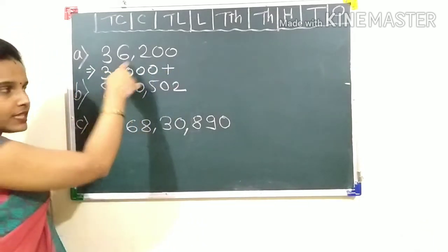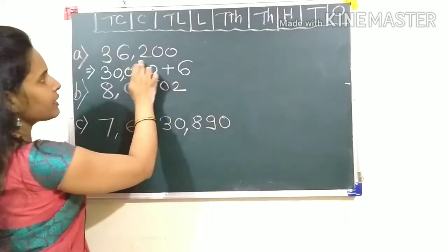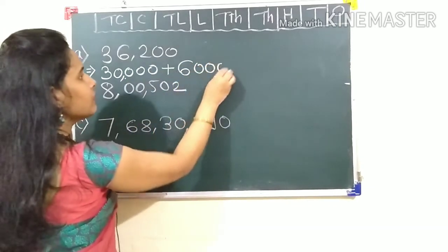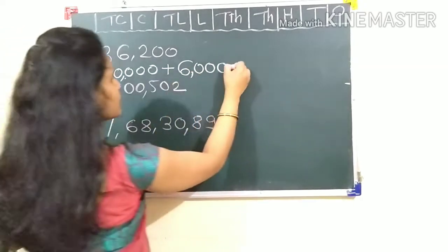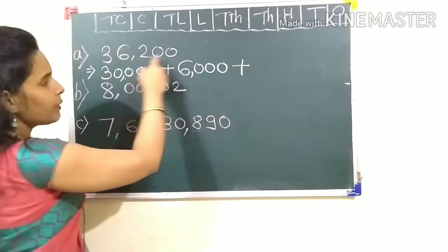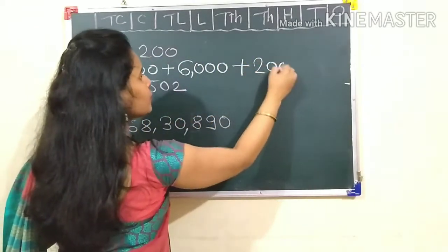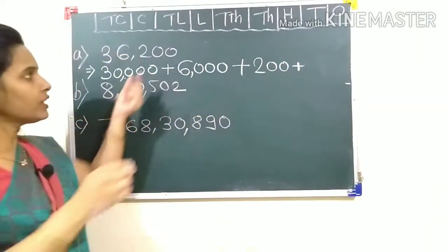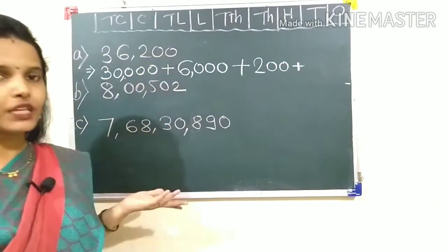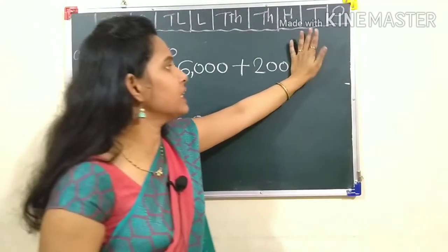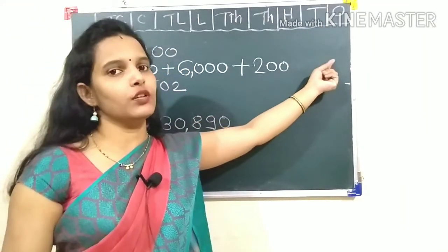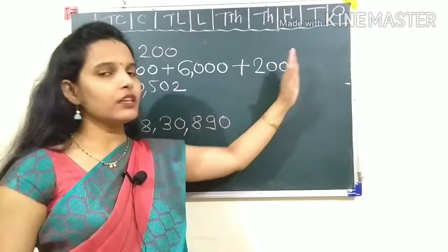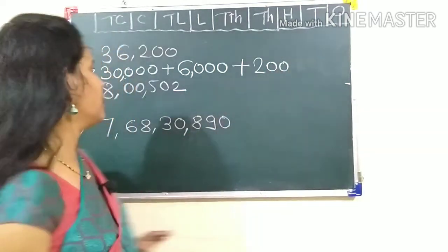Plus, the next digit is six. So six with three digits after it means the value of six is 6,000. Plus two with two digits after it is 200. The tens and ones place have zeros, so there is nothing to do with it. You don't need to add zero, if you leave it, it's okay.